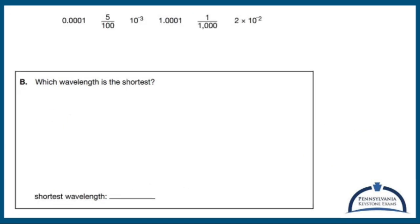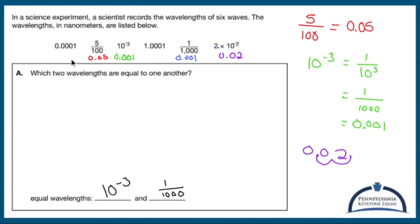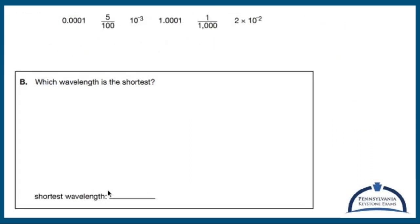Part B: which wavelength is the shortest? Let me go back to my original. The shortest is going to have the smallest number. It looks like it's going to be that guy right there, that's 1/10,000. Definitely not you, definitely not you. You have a one attached to everything, so that's how they're going to try to trick you. That's actually the largest. So it's going to be 1/10,000, which is 0.0001.